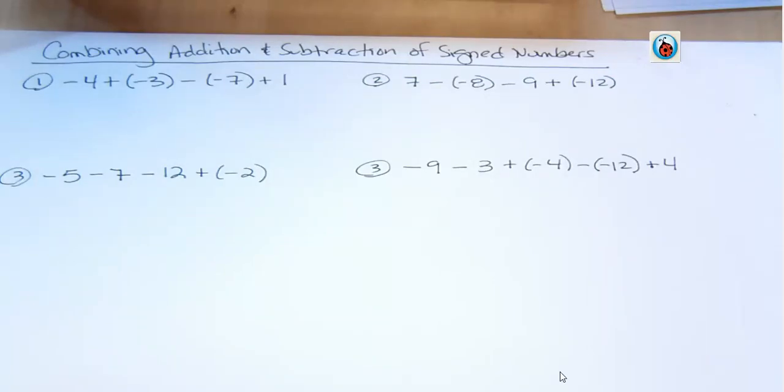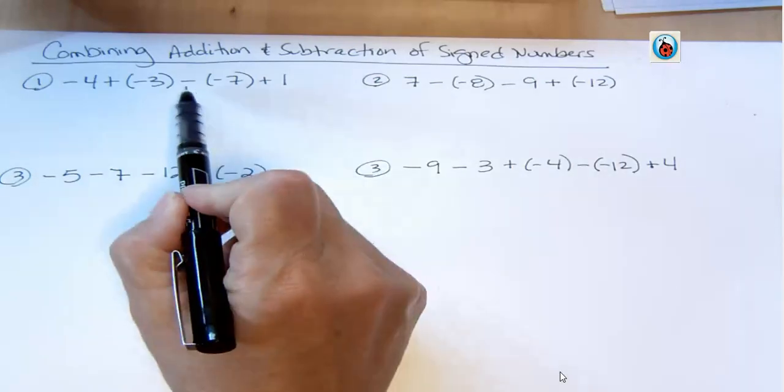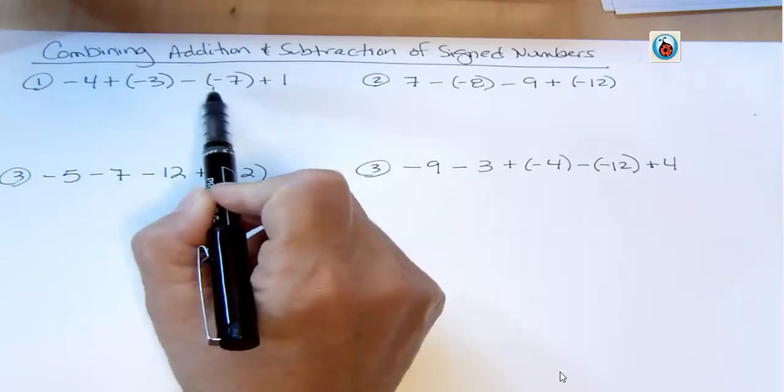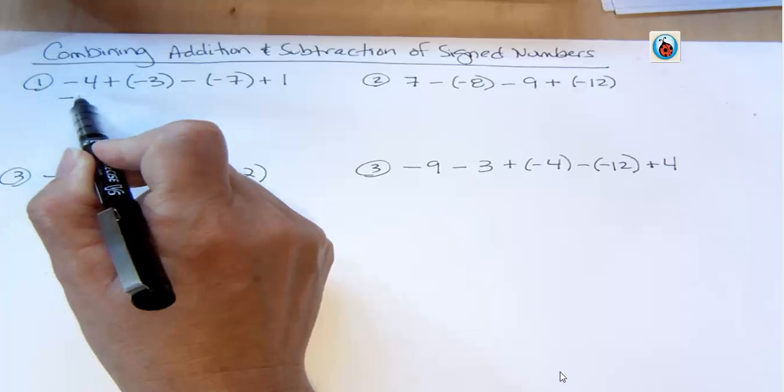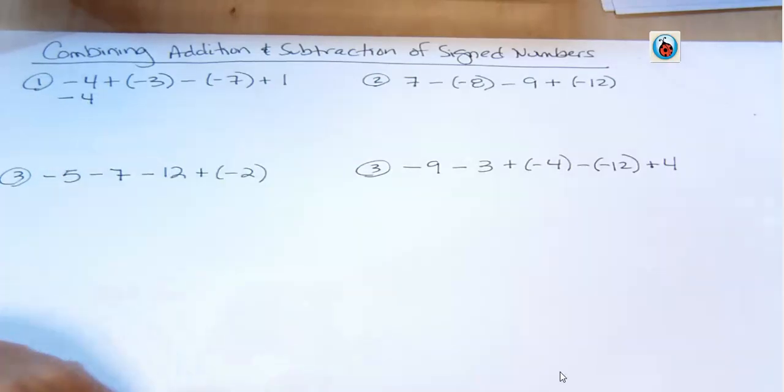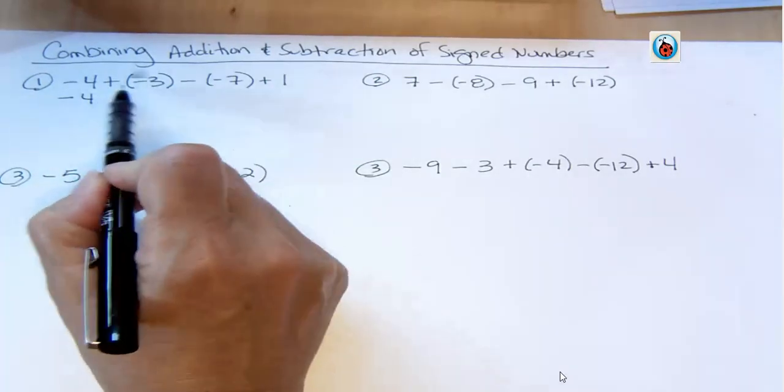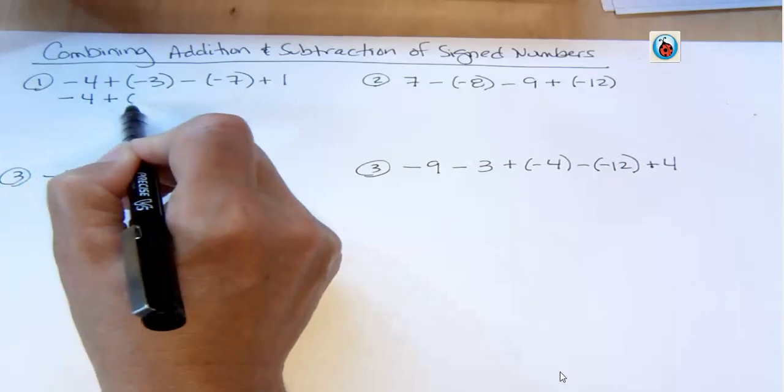Well, I'm still going on the idea that you're going to change your subtraction into addition. And so every time I see a problem, like for example number one, I'm going to change any subtraction problems into addition. Now this one starts off with negative 4. I never change the first term. And I'm not changing any of the addition parts either, so this is still going to be the same.